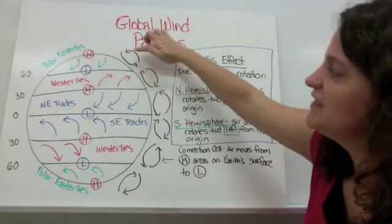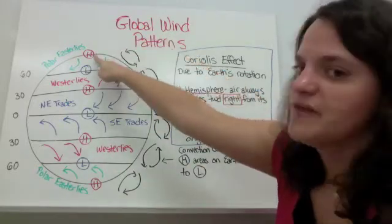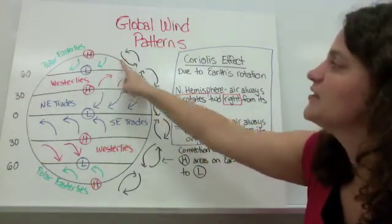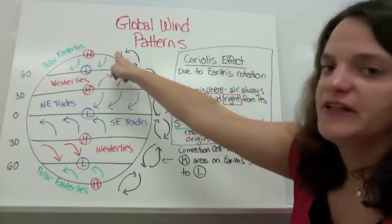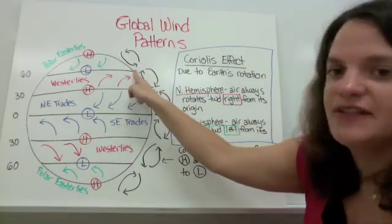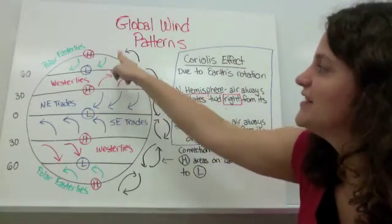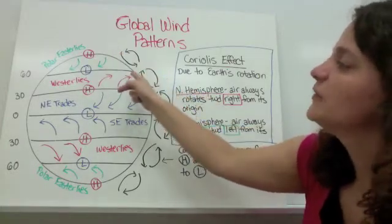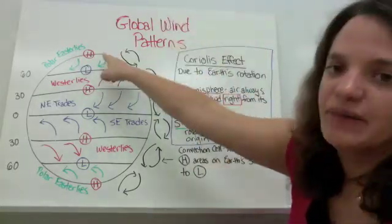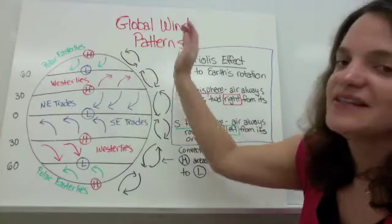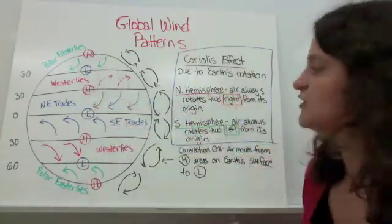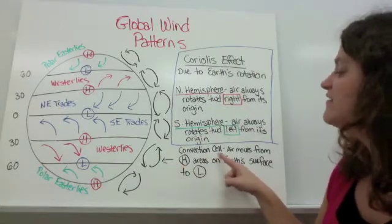In each of these areas, air moves from the high pressure center to the low pressure center. Along Earth's surface, air rushes from the high pressure center toward the low pressure center, then the low pressure air rises and drifts back toward the high pressure center. This creates vertical cells of wind — that circular movement is called a convection cell.